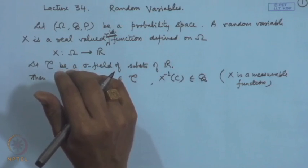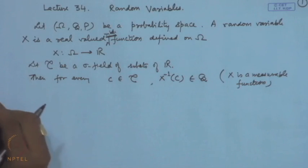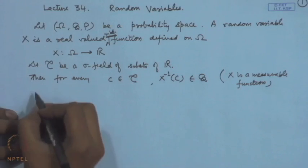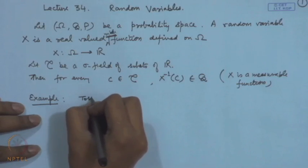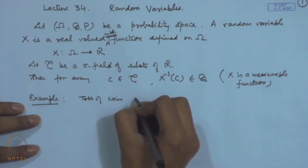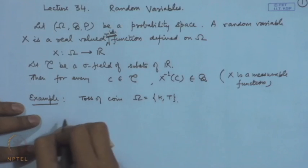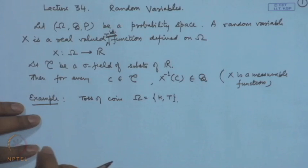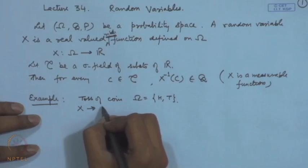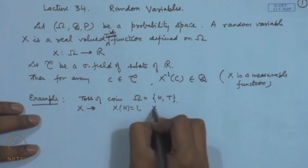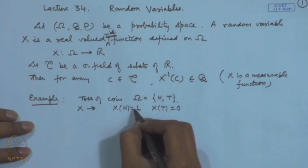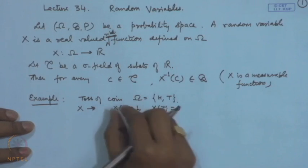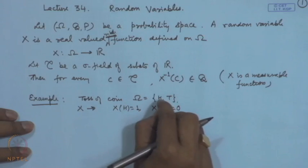First, let us consider the types of random variables. Consider a toss of a coin. If we are interested in whether a head occurred or not, we can define a random variable X such that X(H) = 1 and X(T) = 0. This means that if head has occurred the indicator is 1, otherwise it is 0. From the value of X you can determine whether a head occurred or not.